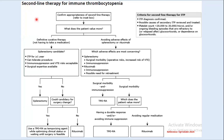The choice of second-line treatment depends on the patient's preference and underlying comorbidities. If the patient wants definitive curative therapy and does not want to take medication long-term, they can undergo splenectomy if they fulfill the criteria. If the patient wishes to avoid the effects of splenectomy or immunosuppression from rituximab, they can opt for TPO receptor agonists.